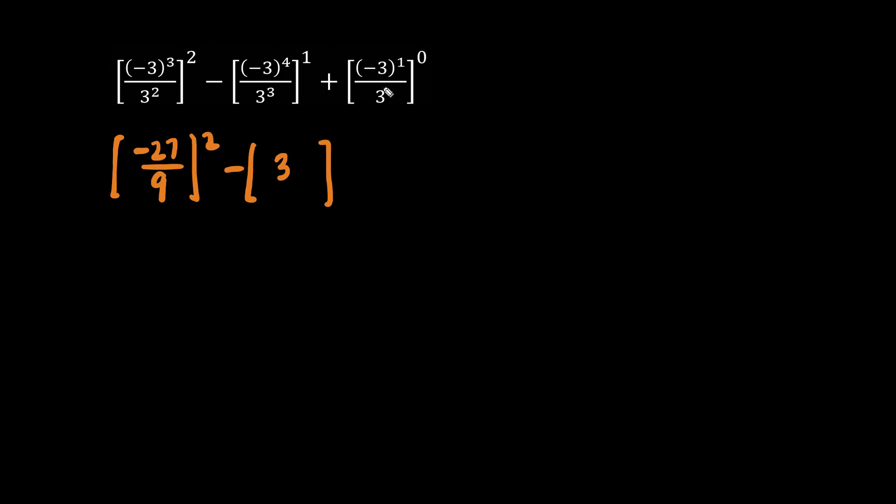And here, anything to the 0 is just 1. We now have negative 27 over 9, which is negative 3, all squared. Negative 3 times negative 3 is positive 9. And we have minus 3 plus 1. 9 minus 3 is 6, plus 1 is 7.